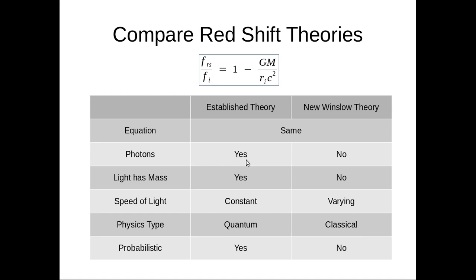The established theory also relies on probability. It says that photons are appearing and reappearing and moving in random patterns and actually have some kind of intelligence that decides where they're going to go. The new Winslow theory, again, just relying on established physics.